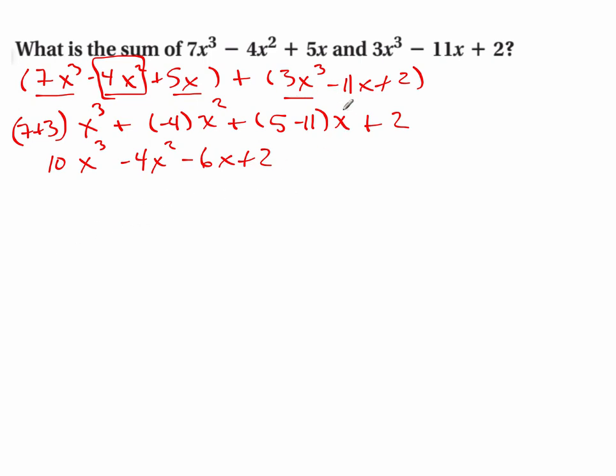I have another method that I actually prefer because it keeps me from adding the wrong coefficients. What I'm going to do is write my polynomial in standard form, but I'm going to put in any zeros that I have. I don't have an x² term, so I'm going to put in a 0 there.